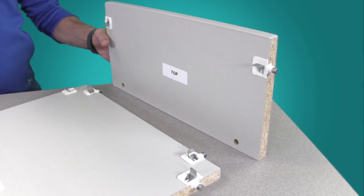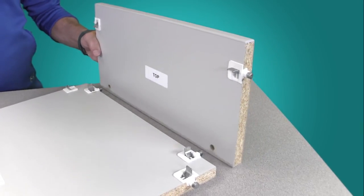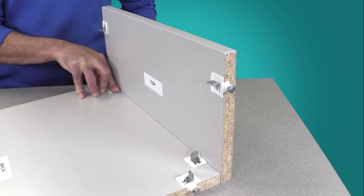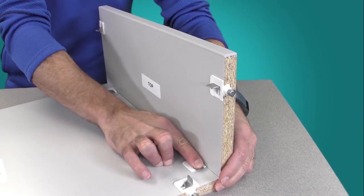With the back panel on a flat surface bring the top panel into position. Attach the top panel by aligning the pre-drilled holes with the connection fittings in the back panel. Push the two panels together. Once together press the fitting toggles down to secure.